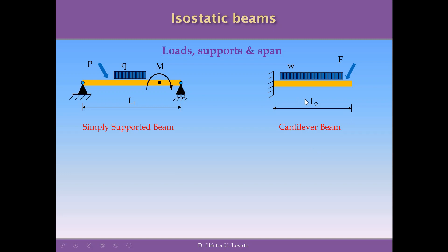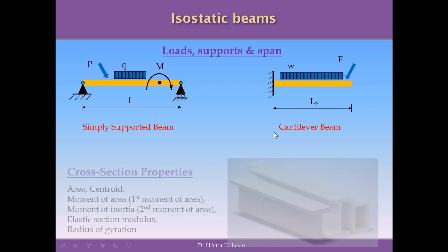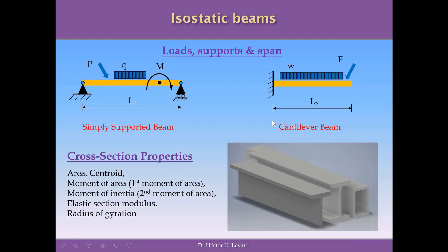The span defines part of the geometrical properties of the beam. But to perform a complete analysis, we also need to define the shape of the cross section and study its properties. On screen, you can see three examples of different cross sections: a T section, an I section, and a hollow rectangular section. Any of these can be used for a simply supported or cantilever beam. The cross section properties include the area, location of the centroid, moment of area, moment of inertia, elastic section modulus, radius of gyration, and many others.